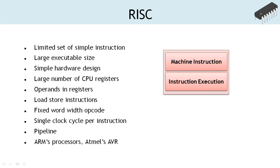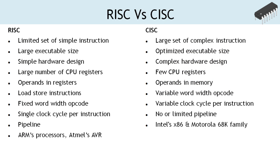RISC processors provide dedicated instructions to move data between registers and memory. The executable code generated for a RISC machine is lengthier than that of a CISC machine and the compiler design for a RISC machine is complex. Atmel's AVR family of microcontrollers, ARM's Cortex-M series of microcontrollers, and several other microcontrollers implement RISC architecture. The table below summarizes the important differences between RISC and CISC architecture.